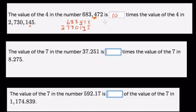The value of the 7 in the number 37.251 is how many times the value of the 7 in 8.275? So I would just write these out. Because you can see now, well, our 7's here, and then it's 1, 2 places to the left. That's 100 times larger.